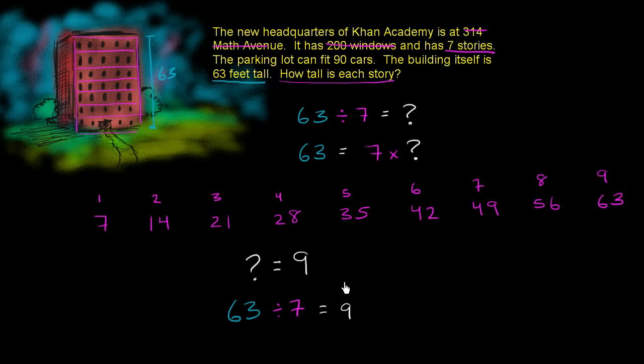And let's think about that. We're saying that if we take 63 feet and divide it into seven equal stories, that each story is going to be nine feet on average. Does that make sense? So does it make sense that each of these stories are going to be nine feet?